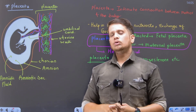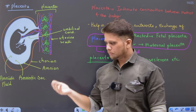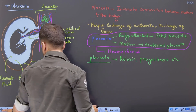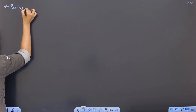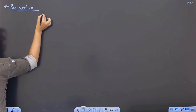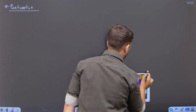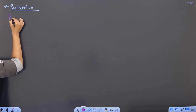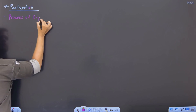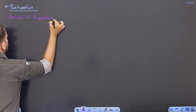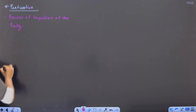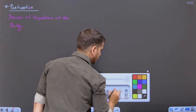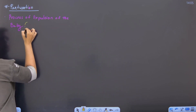Hum loog ne abhi pregnancy ka baat kiya, teen trimesters ka baat kiya, placenta ke development ka baat kiya. Next process kya hoga? Now, we have to deliver the baby. The next process is nothing but called as the process of delivery, which is called as parturition. Parturation is nothing but the process of expulsion of the baby. In common layman terms, this parturition can also be called as delivery.